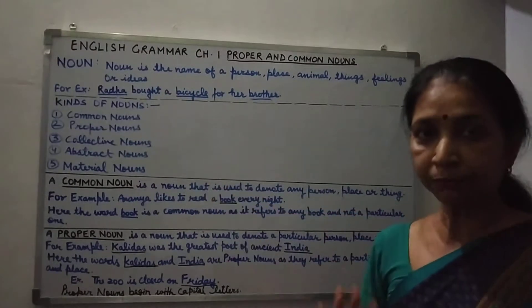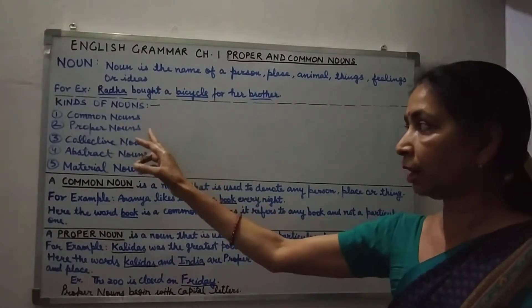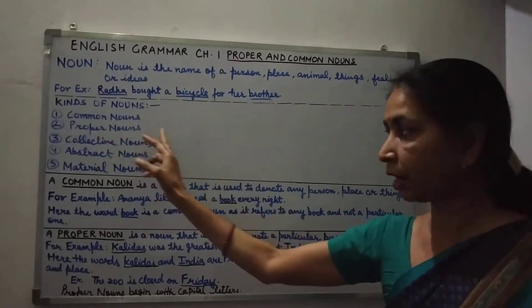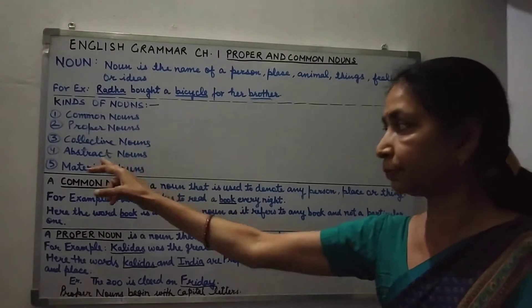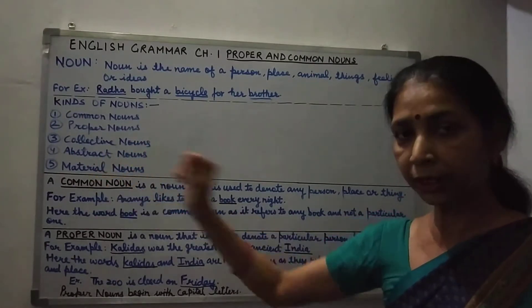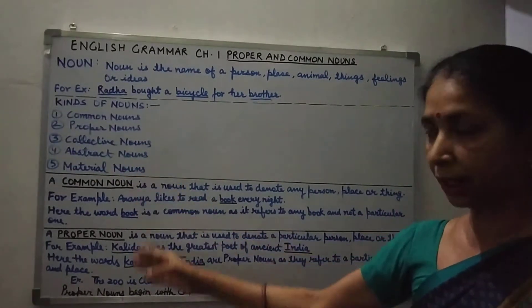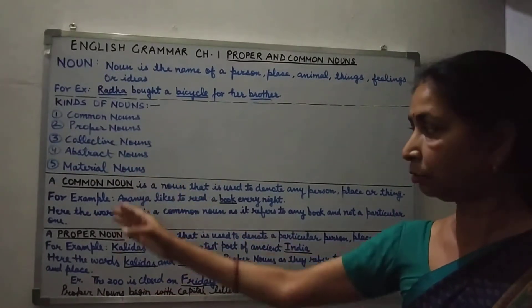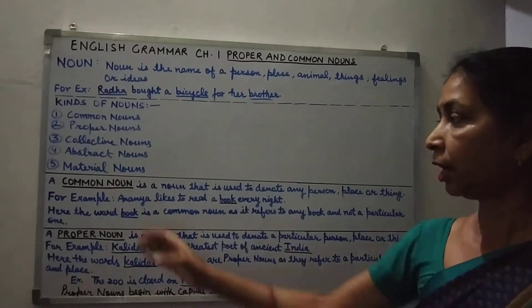There are 5 kinds of nouns: common nouns, proper nouns, collective nouns, abstract nouns, and material nouns. Today I will explain you about common noun and proper noun.